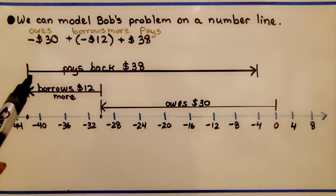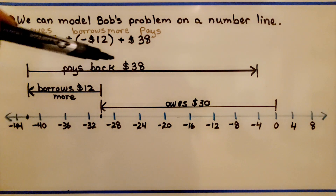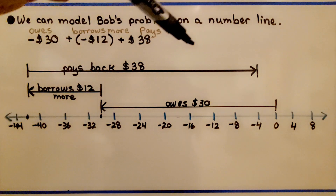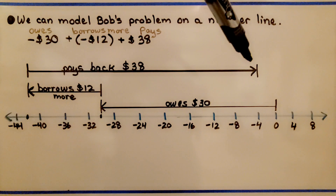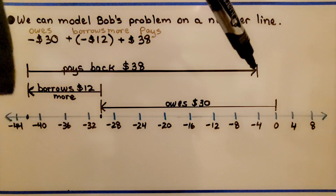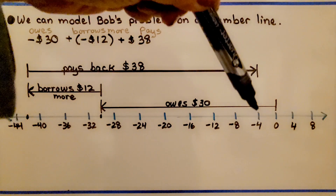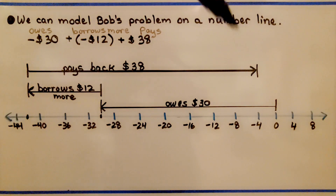Then when he pays them back, we're going to head back to the right because he's not in debt as much. It brings us back to negative 4 — so he still owes $4.